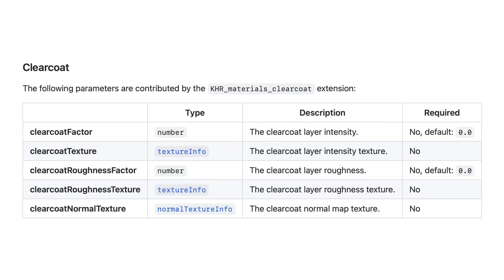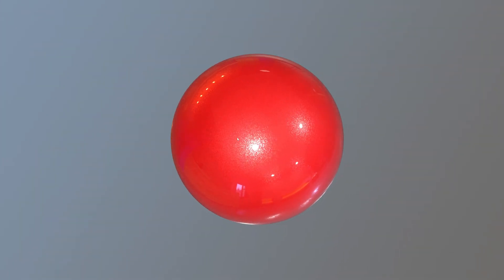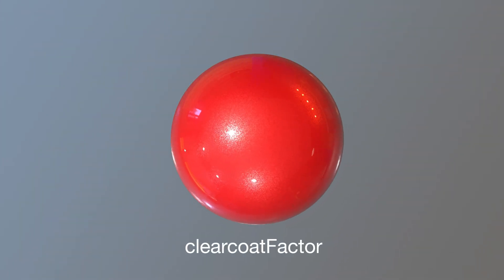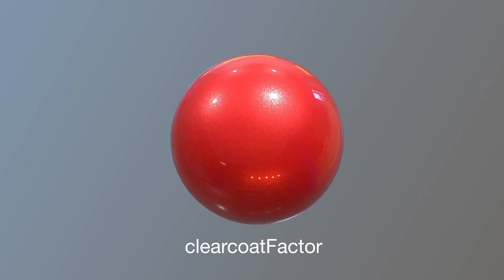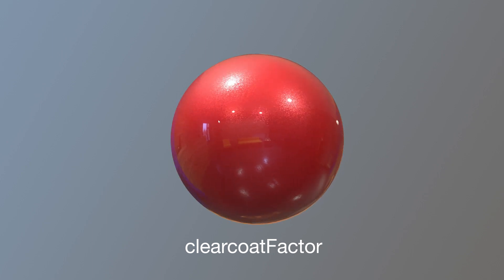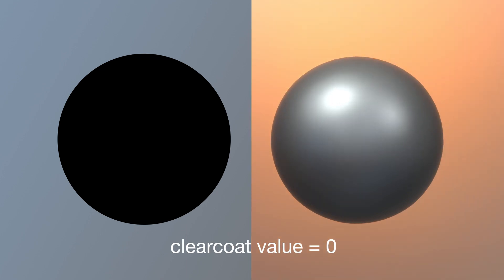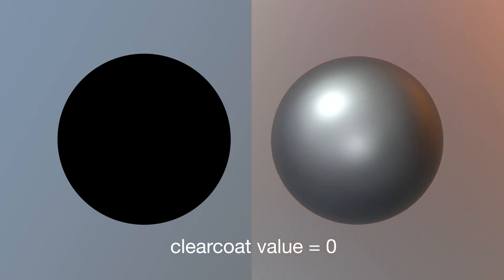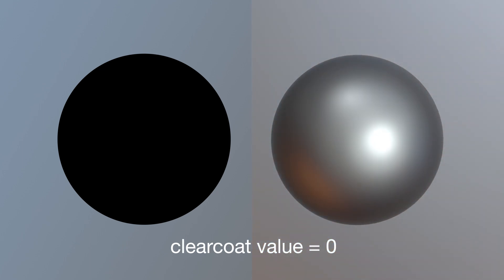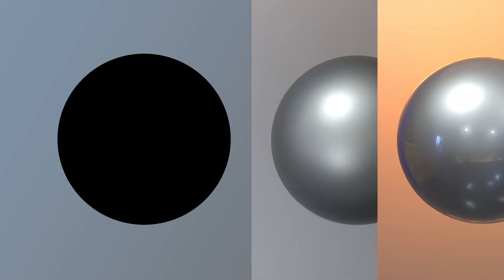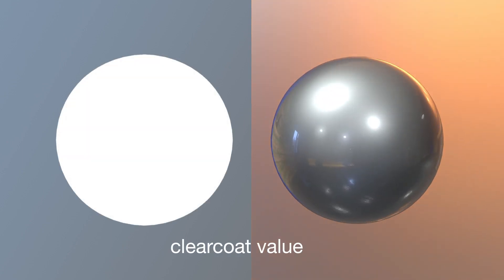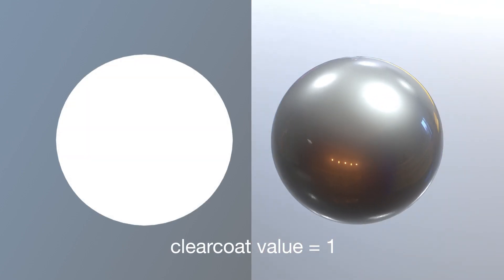Like other PBR extensions, Clear Coat provides parameters corresponding to real-world physical properties. The first parameter is called Clear Coat. The value for Clear Coat can be supplied using a single factor or a texture. A parameter value of zero indicates that no coating has been applied to that portion of the material, while a parameter value of one indicates the presence of the coating.